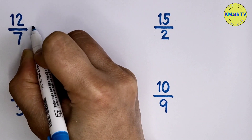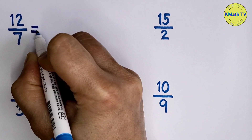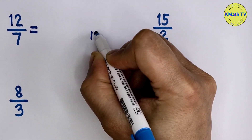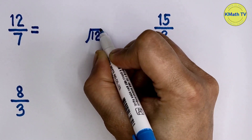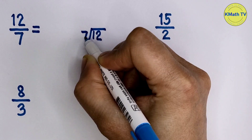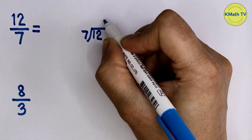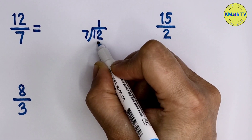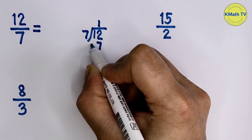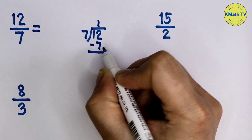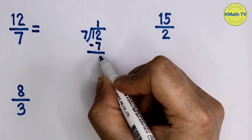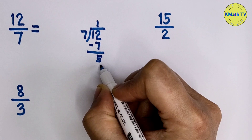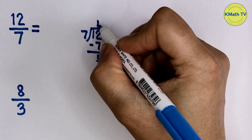Let's answer this one. Let's divide the numerator 12 by the denominator 7. 12 divided by 7 equals 1. 1 times 7 equals 7. Subtract. 12 minus 7 equals 5.